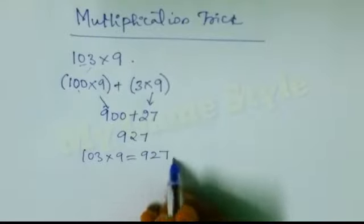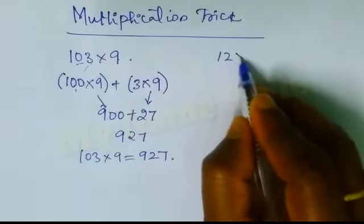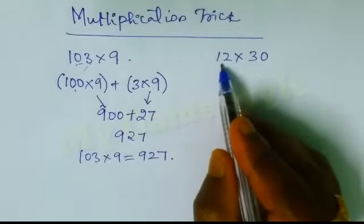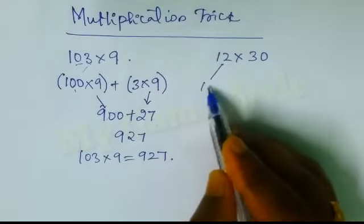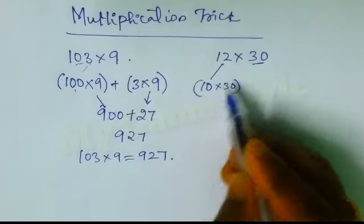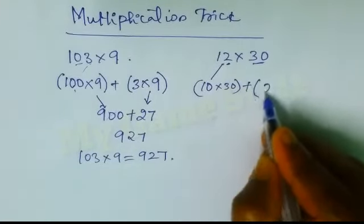So here we will go with another example, 12 into 30. So here 10 is there, 10 plus 2, right? 12. So 10 into this 30, here the 2 is remaining, so plus 2 into this 30.